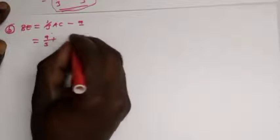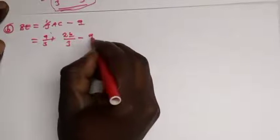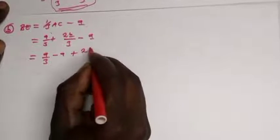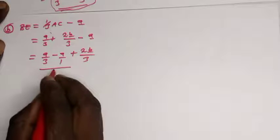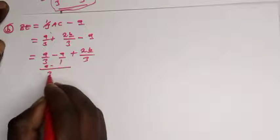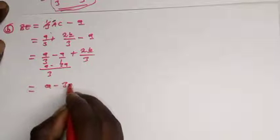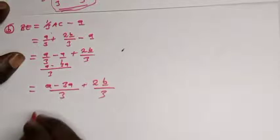Substituting (1/3)AC = a/3 + 2b/3, we get BE = a/3 + 2b/3 - a. Collecting like terms: a/3 - a. Finding a common denominator of 3, that gives a/3 - 3a/3 = -2a/3.